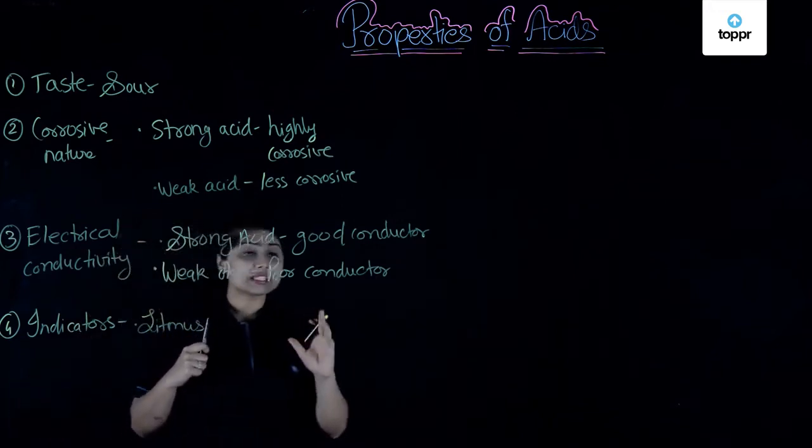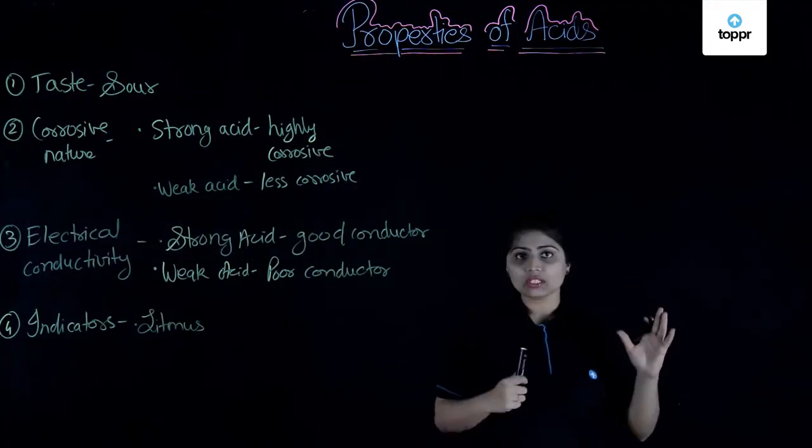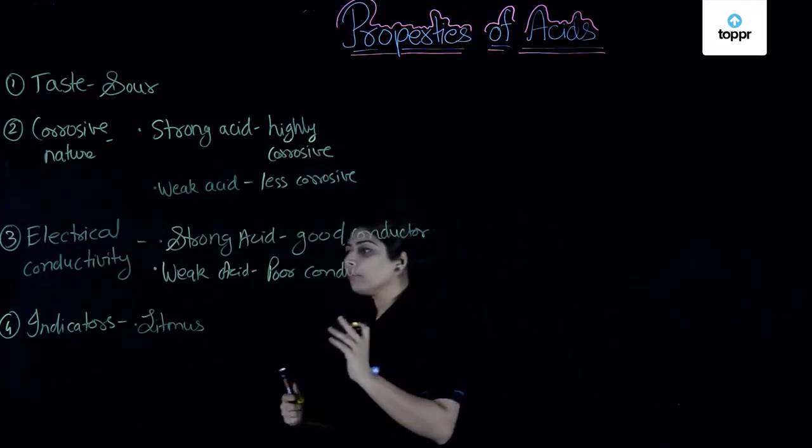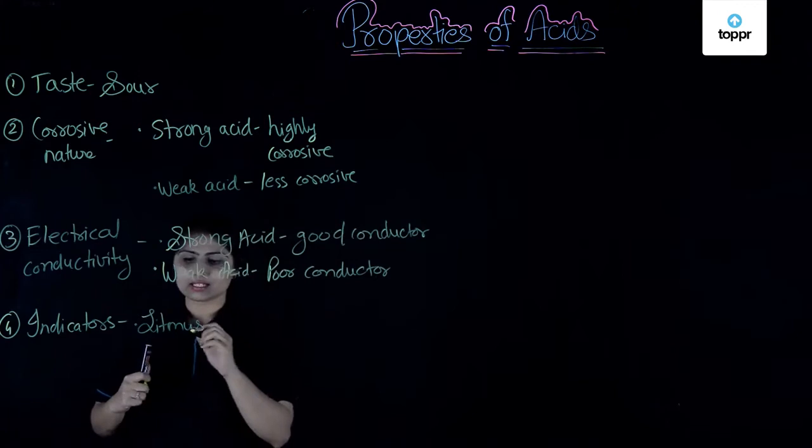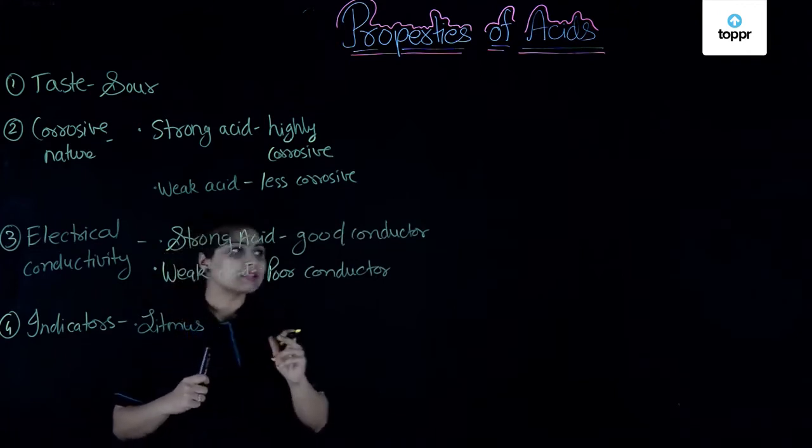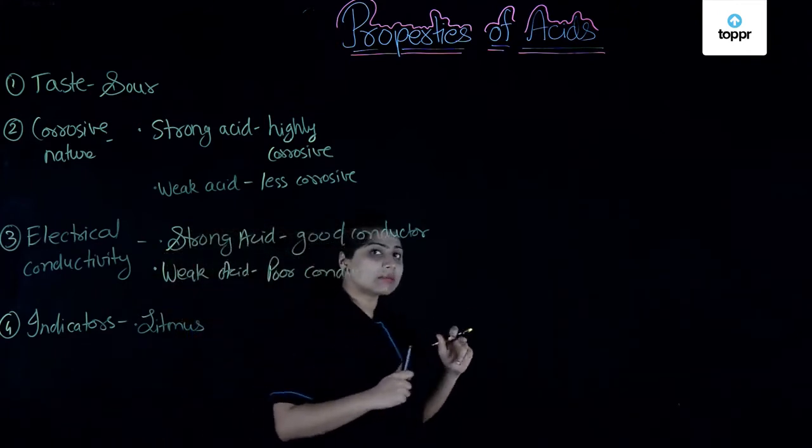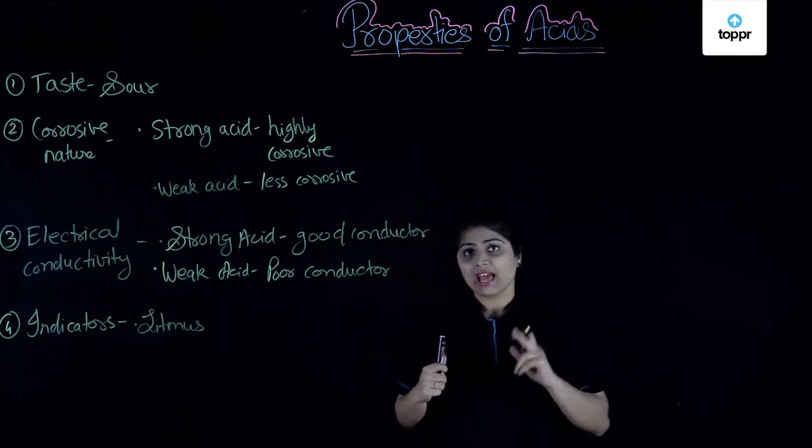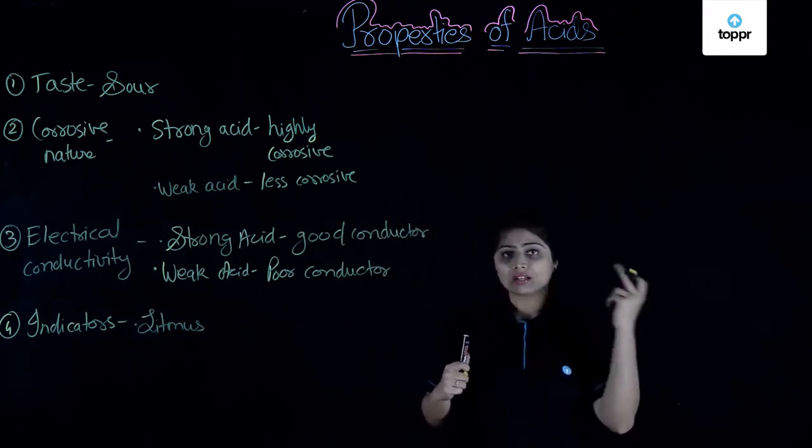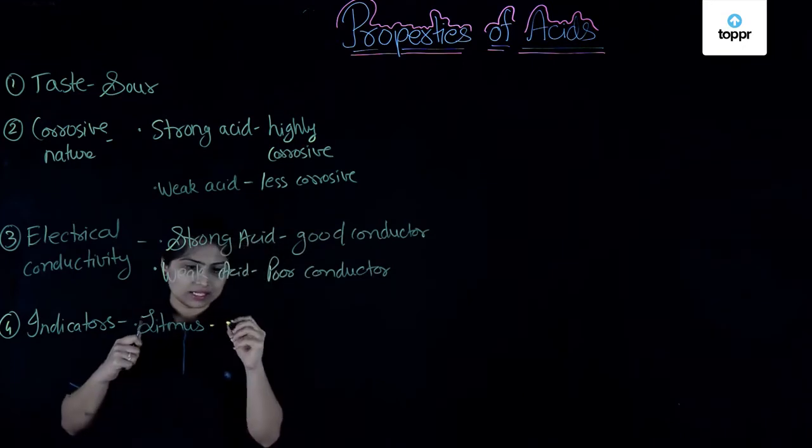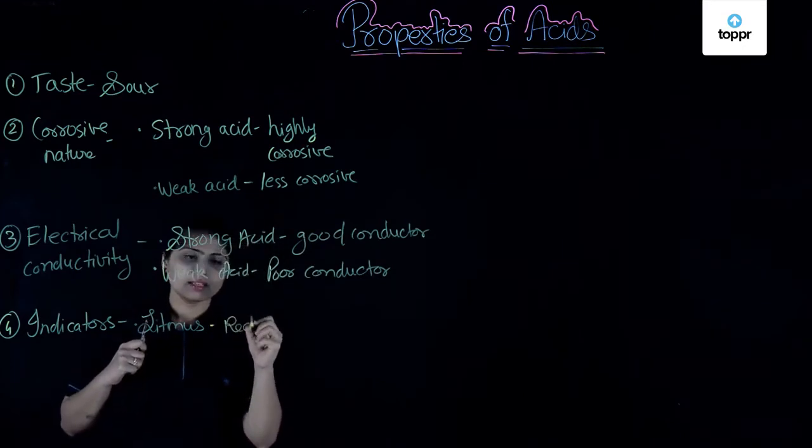A litmus solution, litmus is a natural indicator. It is a natural dye that is extracted from lichens, plant's lichens. It is purple in colour. This litmus changes to red when it comes in contact with acid and it changes to blue when it comes in contact with a base. So, in acids, the colour of litmus is red.